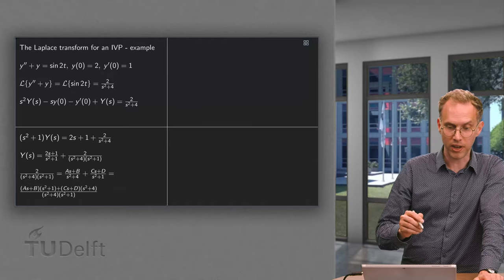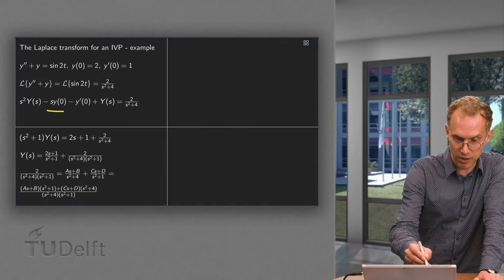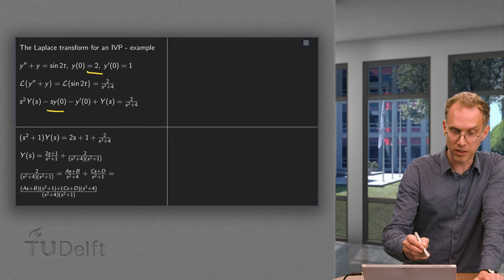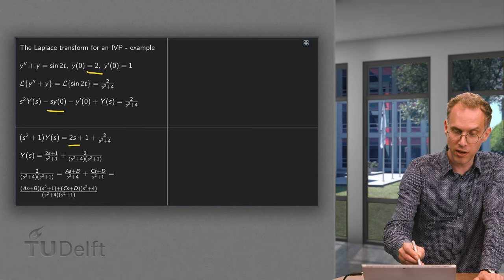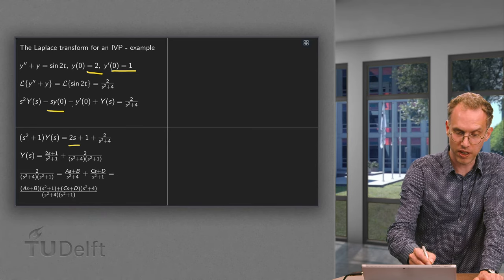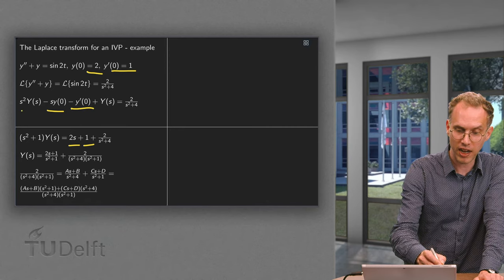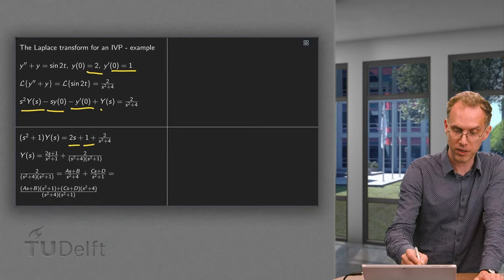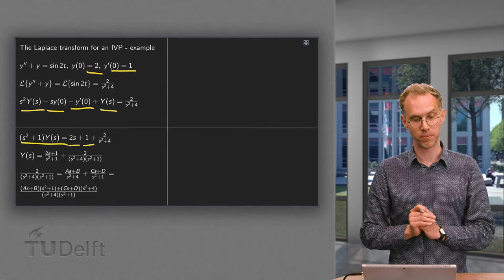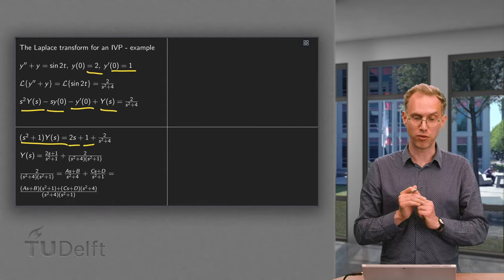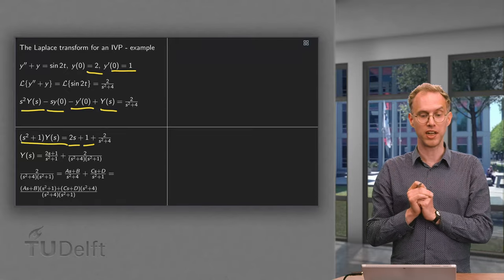Then we plug in the initial conditions. y(0) = 2, so we get a minus 2s and bring it to the other side. y'(0) = 1, so we get a minus 1, brought to the other side. We have s²·Y(s) + 1·Y(s), which gives us (s² + 1)·Y(s). Now we can solve for Y(s) by dividing by s² + 1.